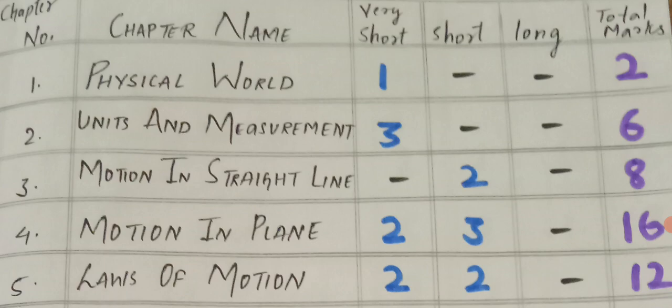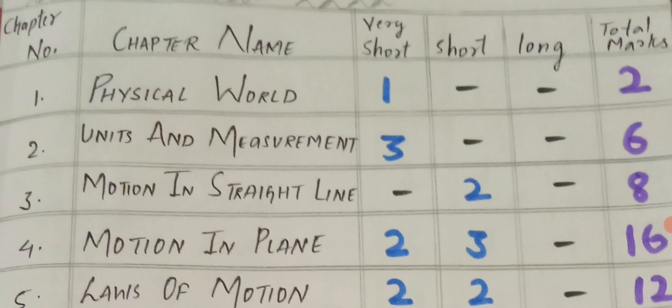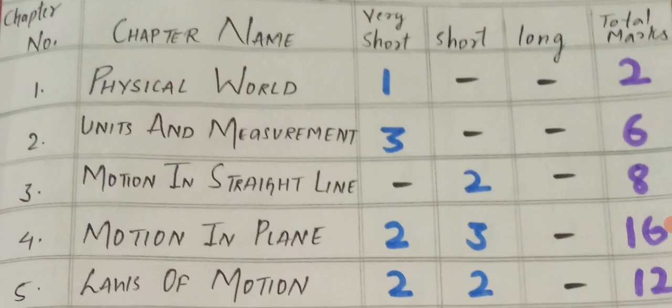Let us see the first chapter, Physical World. This year, according to the latest model paper released by the Board of Intermediate, I have prepared a blueprint that is very helpful for you. The first chapter, Physical World, carries 2 marks—1 VSCQ will come from this chapter.